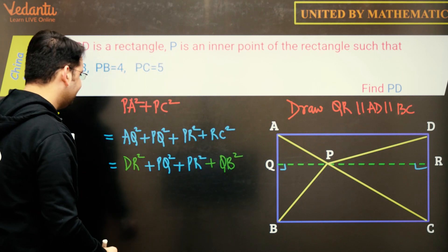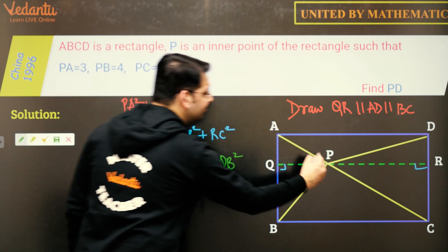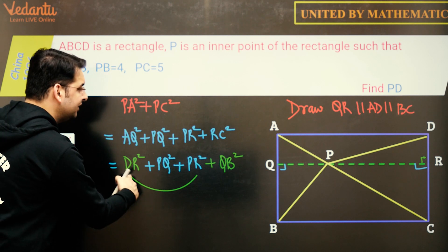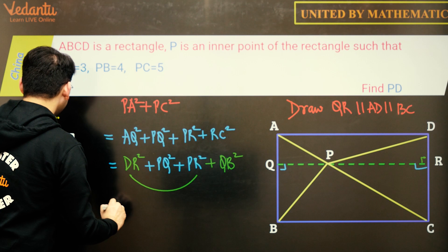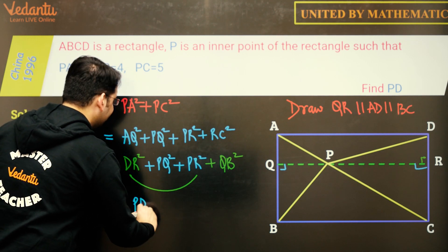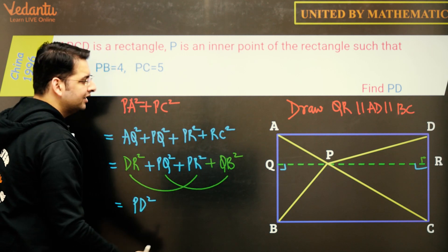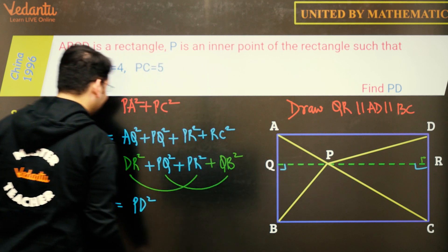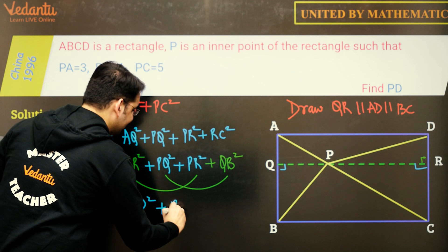Now if we see, can we combine DR with PR? So in triangle PDR, which is a right angle triangle, we can apply Pythagoras theorem. So DR square plus PR square is of course PD square. And likewise, PQ square and QB square can be combined in this triangle and this result will of course be PB square.